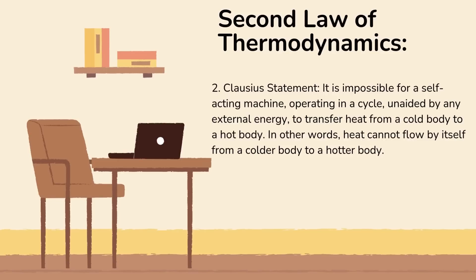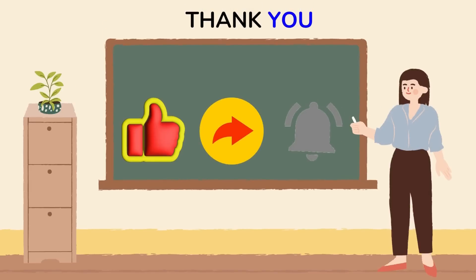The Clausius statement says: it is impossible for a self-acting machine operating in a cycle, unaided by any external energy, to transfer heat from a cold body to a hot body. In other words, heat cannot flow by itself from a colder body to a hotter body.